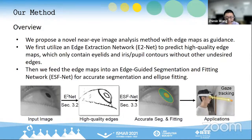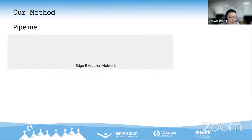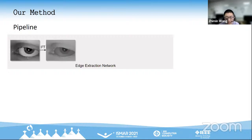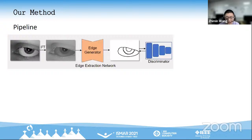Such edges are highly related to the high-level semantic tasks. We propose a novel near-eye image analysis method with edge maps as guidance. Specifically, we first utilize an edge extraction network to predict high-quality edge maps, which only contain eyelids and iris or pupil contours without other undesired edges. To acquire sufficient realistic training images, we further propose the image intensity transfer approach for generating realistic images from synthetic images.